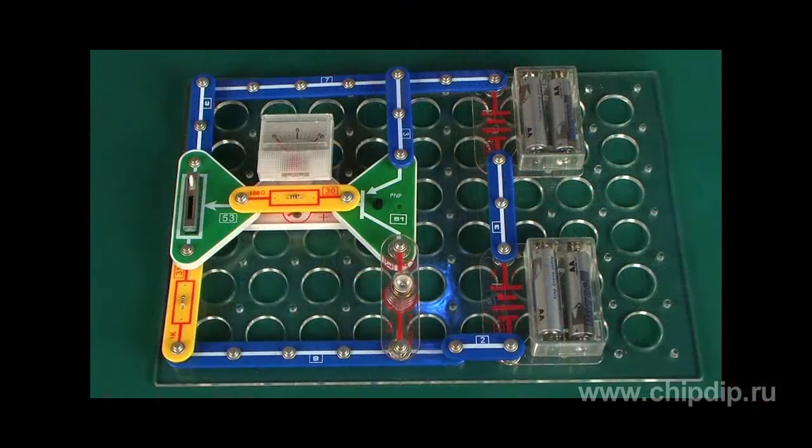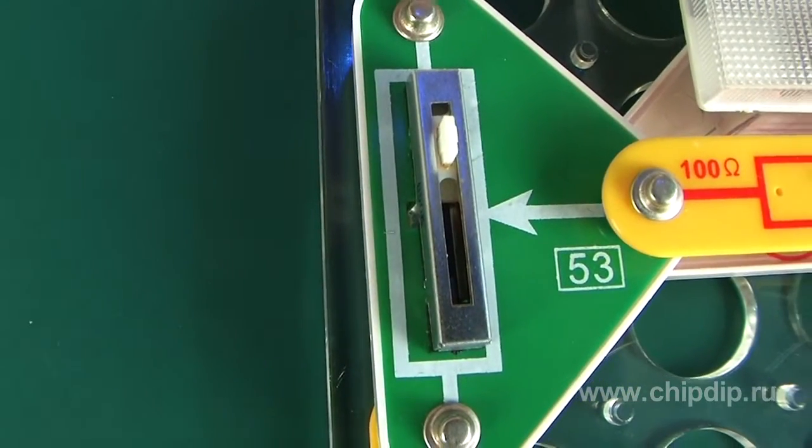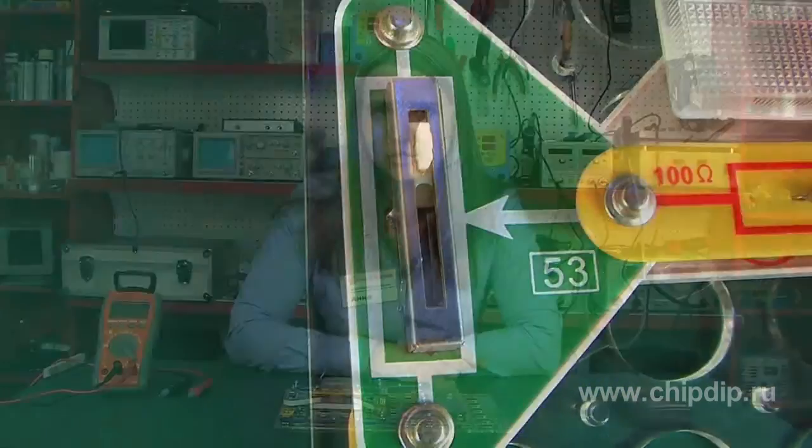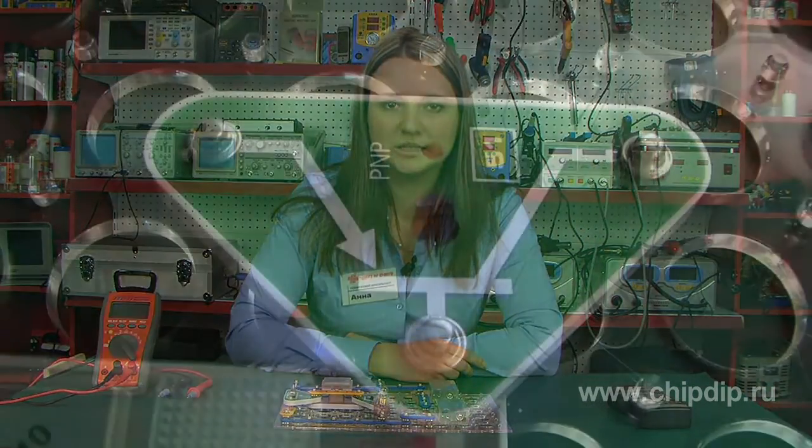Let us use this circuit to see how the current is amplified. The rheostat slider is in its top position. A positive potential is at the transistor base. The transistor is closed.